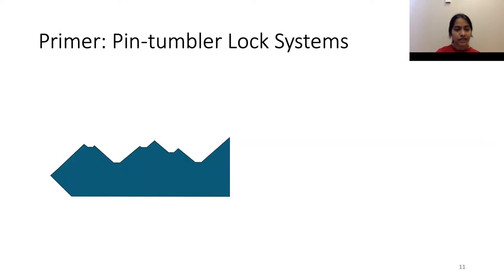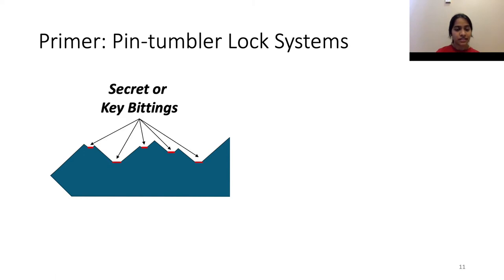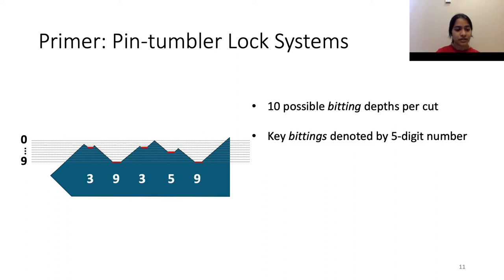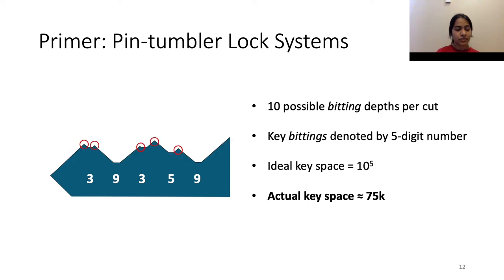If we take a closer look at the key, we see that it has cuts of different depths. It is in fact these depths that make up the secret of the key and are also called key bittings. Each of these cuts takes on 10 possible depth values. Each key secret is represented as a five-digit number, in this case 39359. This indicates that the ideal key space should be 10 to the power of 5. However, due to manufacturing constraints, the actual number of keys is about 75,000. The key's geometry also gives rise to peaks, also known as ridges, which become a crucial part of our attack as they are responsible for the production of sound.